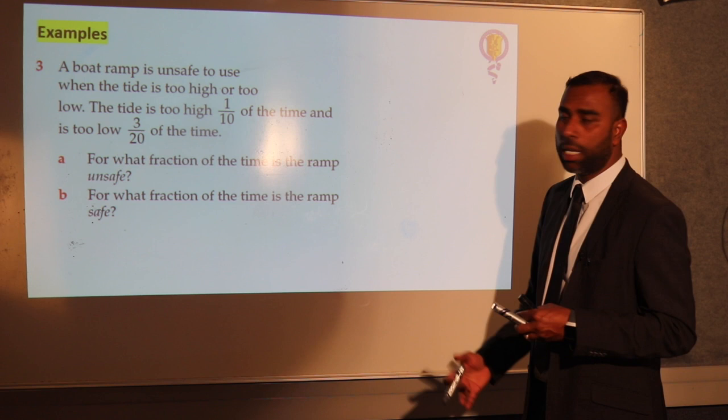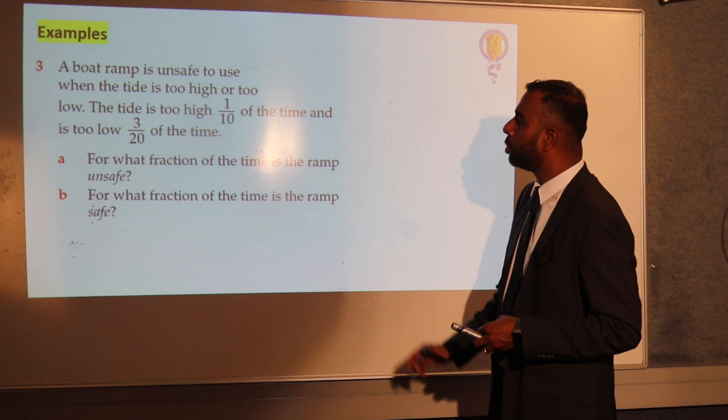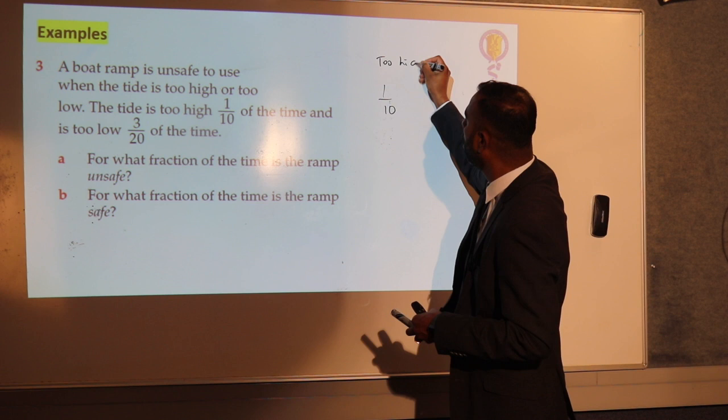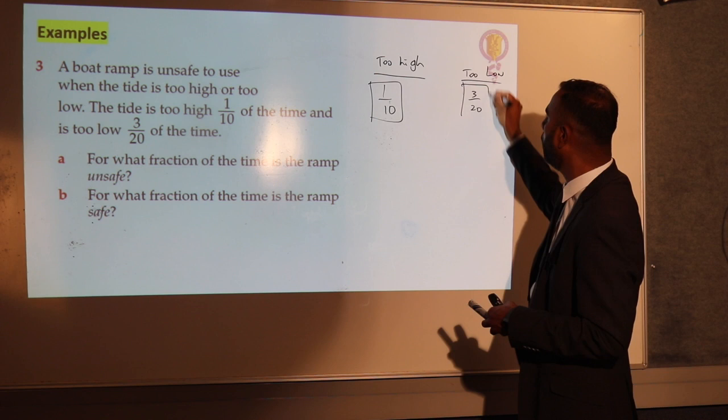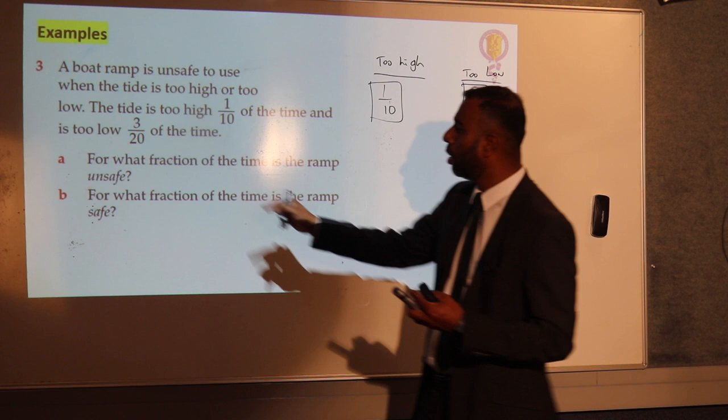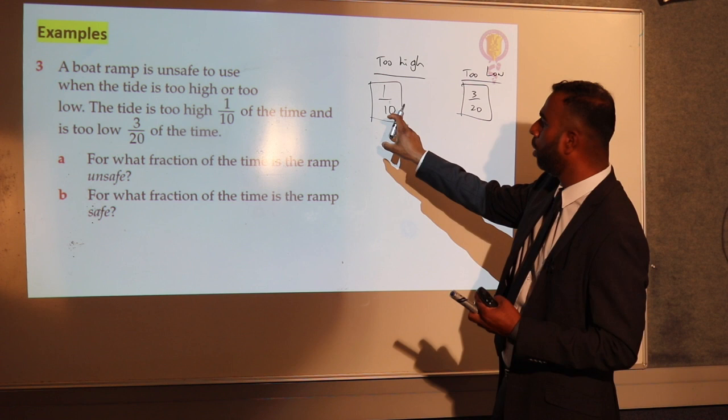Example 3: a boat ramp is unsafe to use when the tide is too high or too low. The tide is too high 1 tenth of the time and too low 3 twentieths of the time. So we have two fractions again with different denominators. There are two parts to the question. The first one asks: for what fraction of the time is the ramp unsafe? It is unsafe whether the tide is 1 tenth too high or 3 twentieths too low.